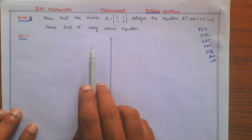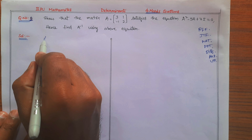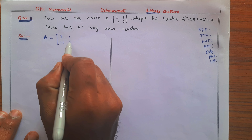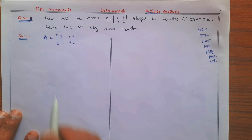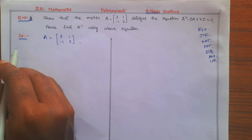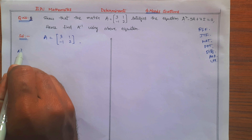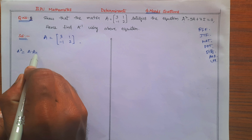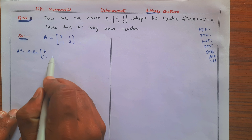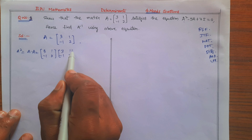Question 2: they are given matrix A = [3, 1; −1, 2]. First we will prove the equation, then find A inverse. So A² = A into A = [3,1;−1,2] × [3,1;−1,2]. The equation to prove is A² − 5A + 7I = 0.